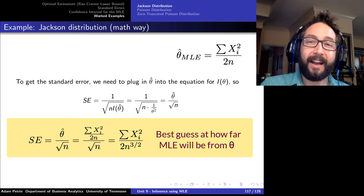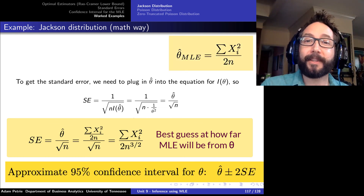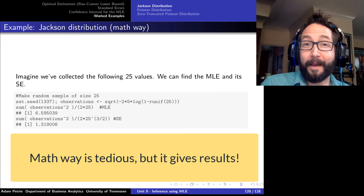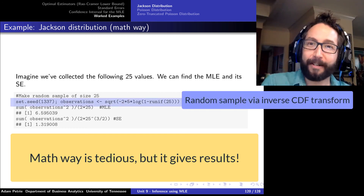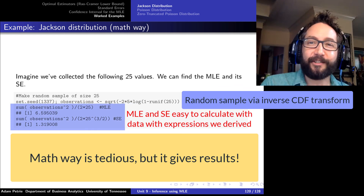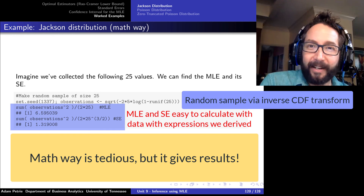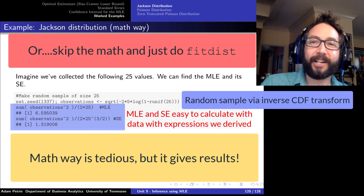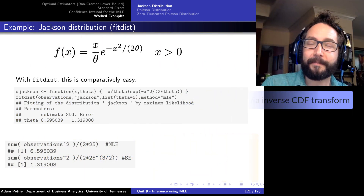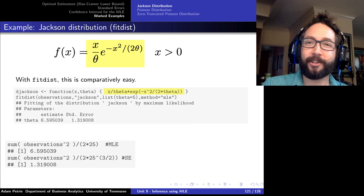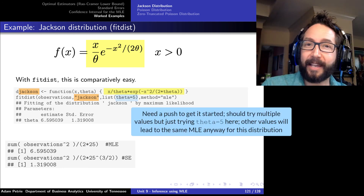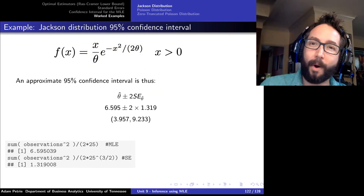So we have everything needed: given a random sample from the Jackson distribution, we can compute the MLE estimate of theta and the standard error. While the math approach is quite involved, if we have the data values, running FITDIST is just as easy. Plugging the data into the mathematical expressions and then verifying with FITDIST — defining the Jackson distribution, transcribing its PDF formula, using a starting value of theta equal to 5 — we recover the same values of the MLE and standard error from both approaches.